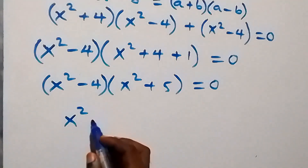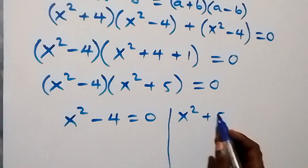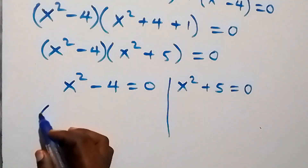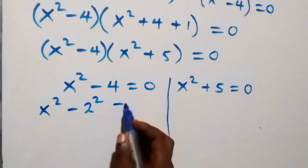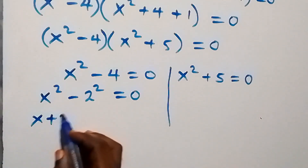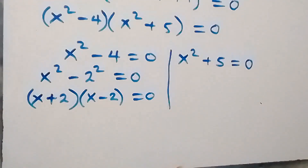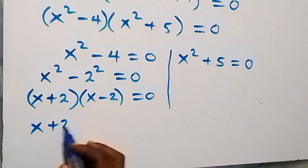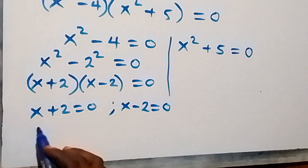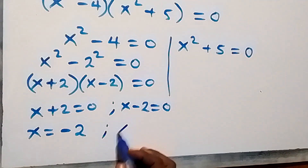We now have two cases: either x squared minus 4 equals zero, or x squared plus 5 equals zero. For the first case, x squared minus 4 equals zero can be written as x squared minus 2 squared equals zero. Applying difference of squares: x plus 2 times x minus 2 equals zero, which implies x equals negative 2 or x equals positive 2.